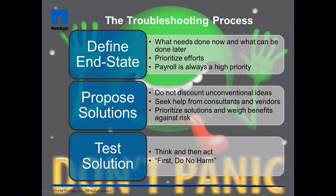Define the desired end state. Not all problems will be immediately resolvable and there may be many problems to resolve. If a natural disaster wipes out half of your data center, you are not going to be back to business as usual by the end of the day. Determine what needs to be done in the next hour, the next day, and the next week. By establishing an immediate goal, you can prioritize efforts.